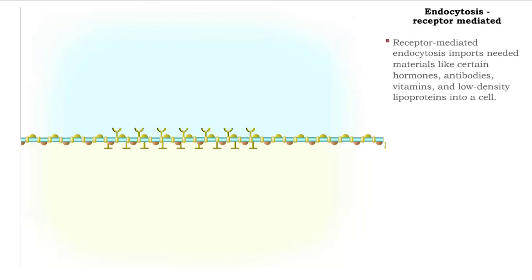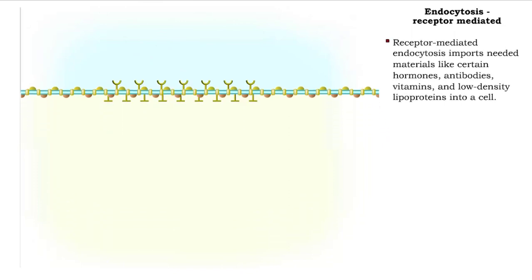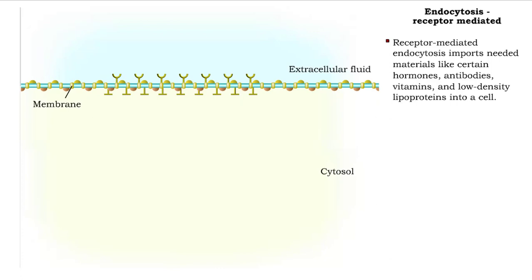Receptor-mediated endocytosis imports needed materials like certain hormones, antibodies, vitamins, and low-density lipoproteins into a cell.